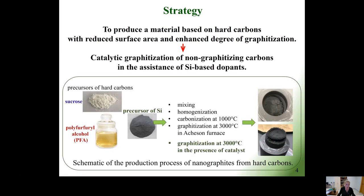For this, I employed the process of catalytic graphitization with the assistance of a silicon-based catalyst. This process can be carried out in two ways. The first way is the addition of silicon-based dopants to a carbon precursor and heat treatment at standard graphitization temperature at 3000 degrees Celsius.